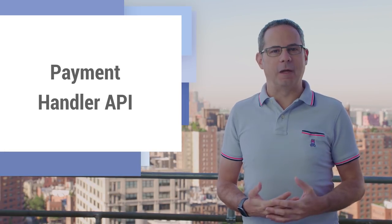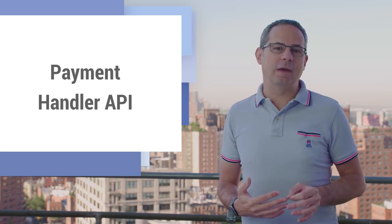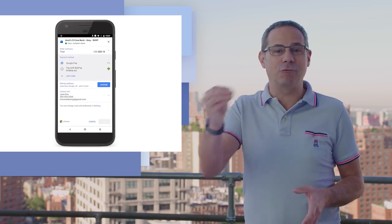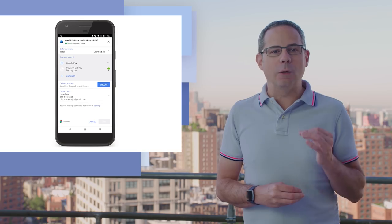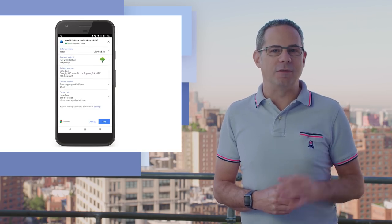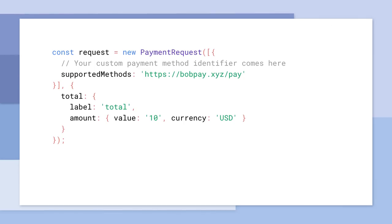The Payment Request API is an open, standards-based way to accept payments. The Payment Handler API extends the reach of Payment Request by enabling web-based payment apps to facilitate payments directly within the Payment Request experience. As a seller, adding an existing web-based payment app is as easy as adding an entry to the supported methods property. If a service worker that can handle the specified payment method is installed, it will show up in the Payment Request UI, and the user can pay with it.